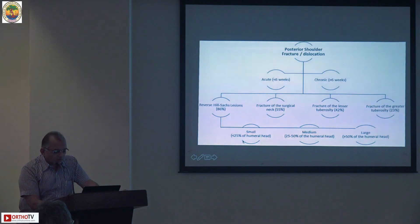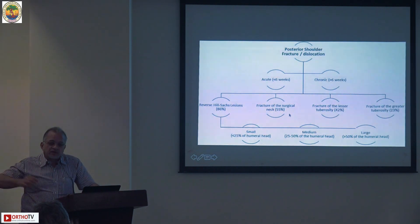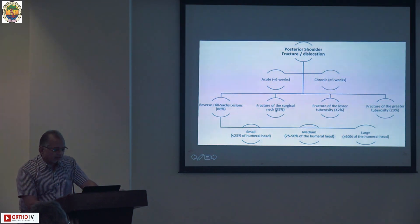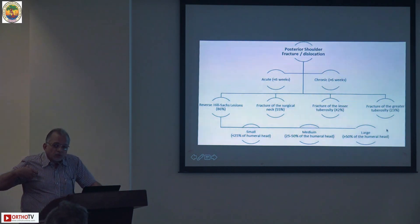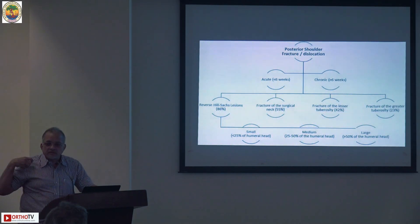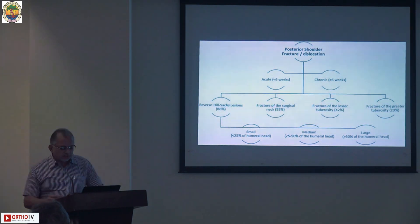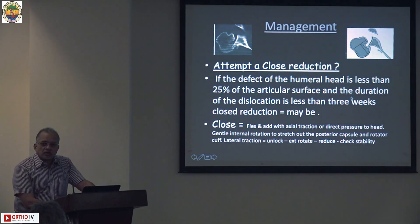If you don't fill up the defect, the patient will have recurrent posterior dislocations. Associated fractures include the humeral neck in about 55%, lesser tuberosity fracture in about 42%, and greater tuberosity fracture in about 23%. As opposed to anterior fracture dislocation where the subscapularis is the pulling force, here the intact supraspinatus and infraspinatus are the forces pulling the head posteriorly.